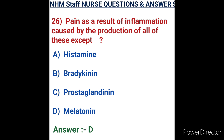Question number twenty-six: pain as a result of inflammation is caused by the production of all of these except. Options: A) histamine, B) bradykinin, C) prostaglandin, D) melatonin. Histamine works with nerves to produce itching. Bradykinin is involved in anti-inflammatory airway disease. Prostaglandins act primarily at sites of tissue damage and infection. Melatonin is a natural hormone produced by the pineal gland that helps control the sleep cycle. Option D, melatonin, is the correct answer.